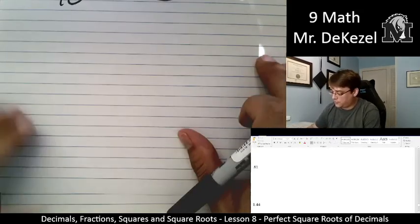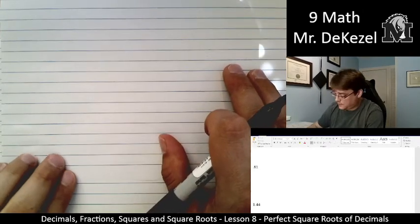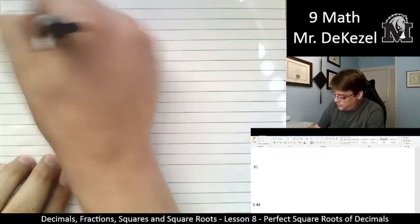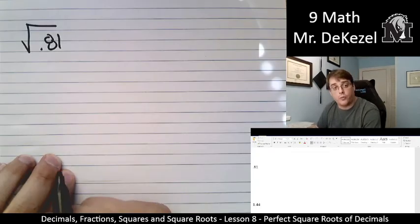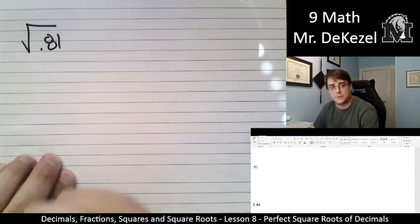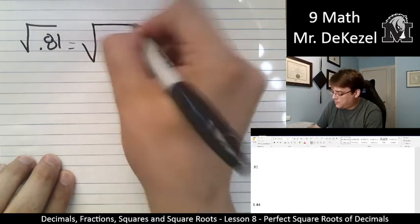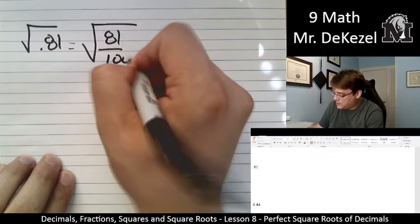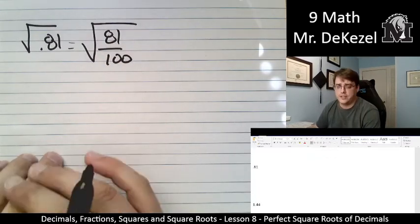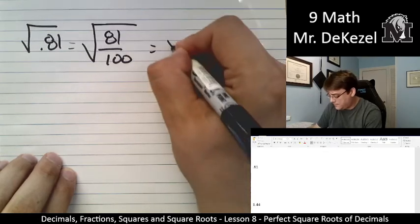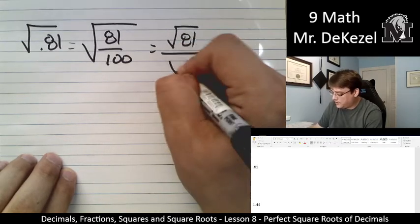The root of 0.81. So there's two decimal places here. I'm going to put it over 100. So it's the same as the root of 81 over 100. Again, I know both of these. The root of 81 is 9. The root of 100 is 10.